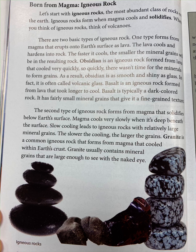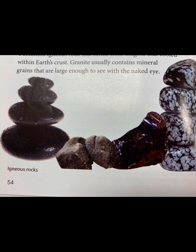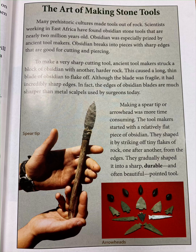Basalt is an igneous rock formed from lava that took longer to cool. Basalt is typically a dark-colored rock with fairly small mineral grains that give it a fine-grained texture. The second type of igneous rock forms from magma that solidifies below earth's surface. Magma cools very slowly when it's deep beneath the surface. Slow cooling leads to igneous rocks with relatively large mineral grains. Granite is a common igneous rock that forms from magma that cooled within earth's crust, usually containing mineral grains large enough to see with the naked eye.